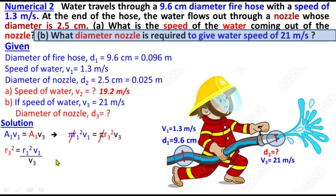Expressing radius in terms of diameter: R₃ equals D₃/2 and R₁ equals D₁/2. This gives (D₃/2)² equals (D₁/2)² times V₁/V₃. Expanding: D₃²/4 equals D₁²/4 times V₁/V₃. The 4s cancel, leaving D₃² equals D₁² times V₁ divided by V₃.